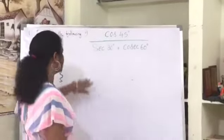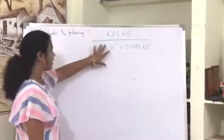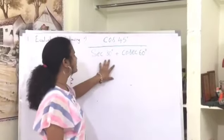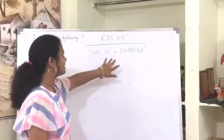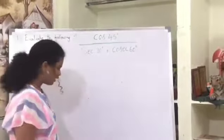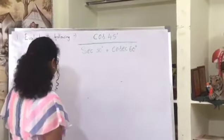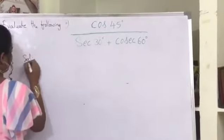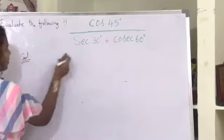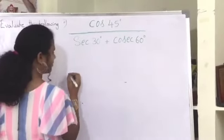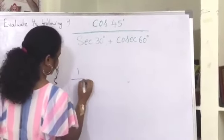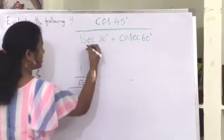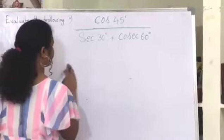The next question is: evaluate cos 45 degrees divided by secant 30 degree plus cosecant 60 degree. Firstly, the value of cos 45 degree is 1 by root 2, divided by secant 30 degree value.